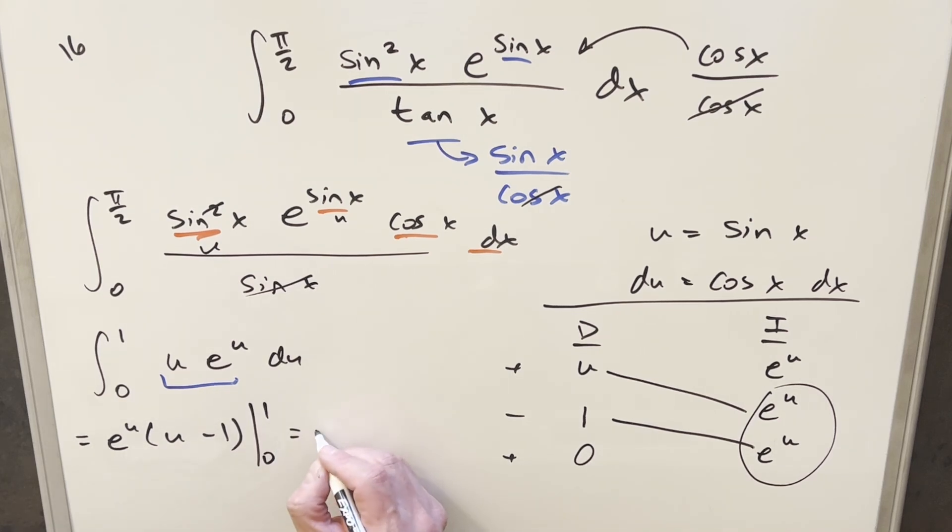So plugging in 1, this is going to give me e to the 1, which is just e. And then here, this is just going to be 1 minus 1. But that's going to be 0, so this whole piece is going away.